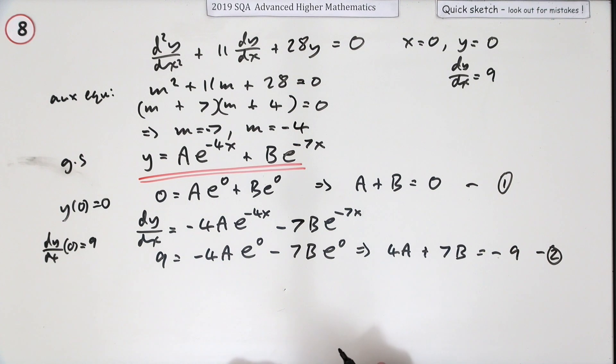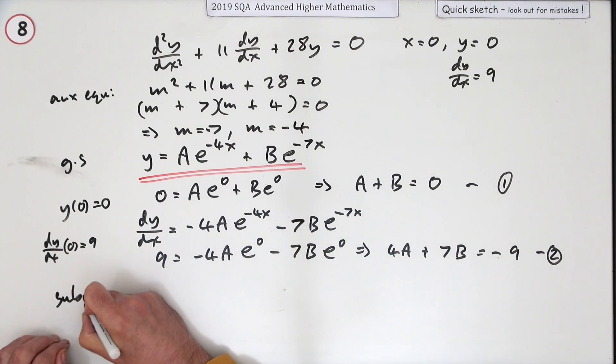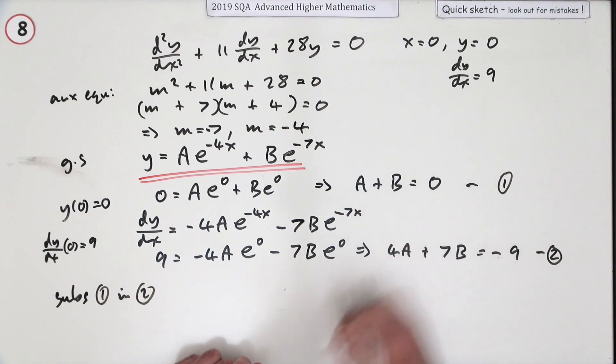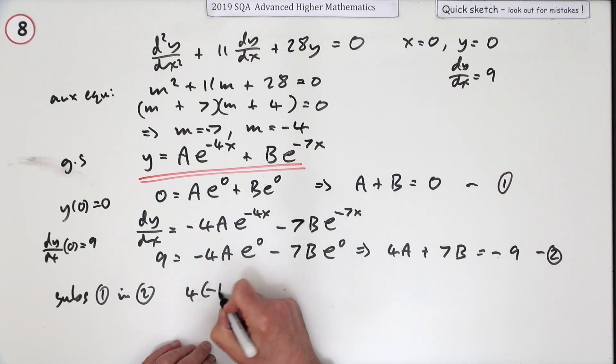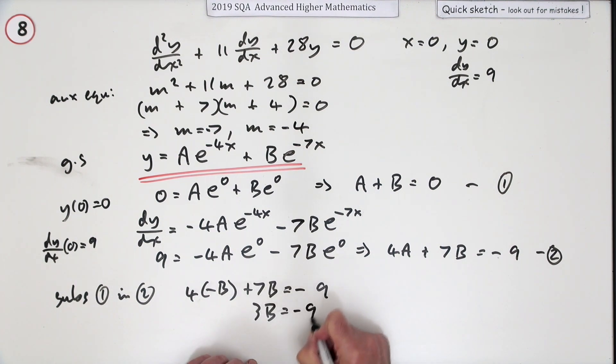I don't know if there's any advantage in doing that because I probably would rather have had that negative just to add them together. I think just to be contrary here, I'm going to do a substitution just because I messed up with those signs. So I'm going to substitute equation 1 into 2 because A equals negative B. So 4 times negative B plus 7B is -9, well that's 3B, so 3B is -9, so B is -3.